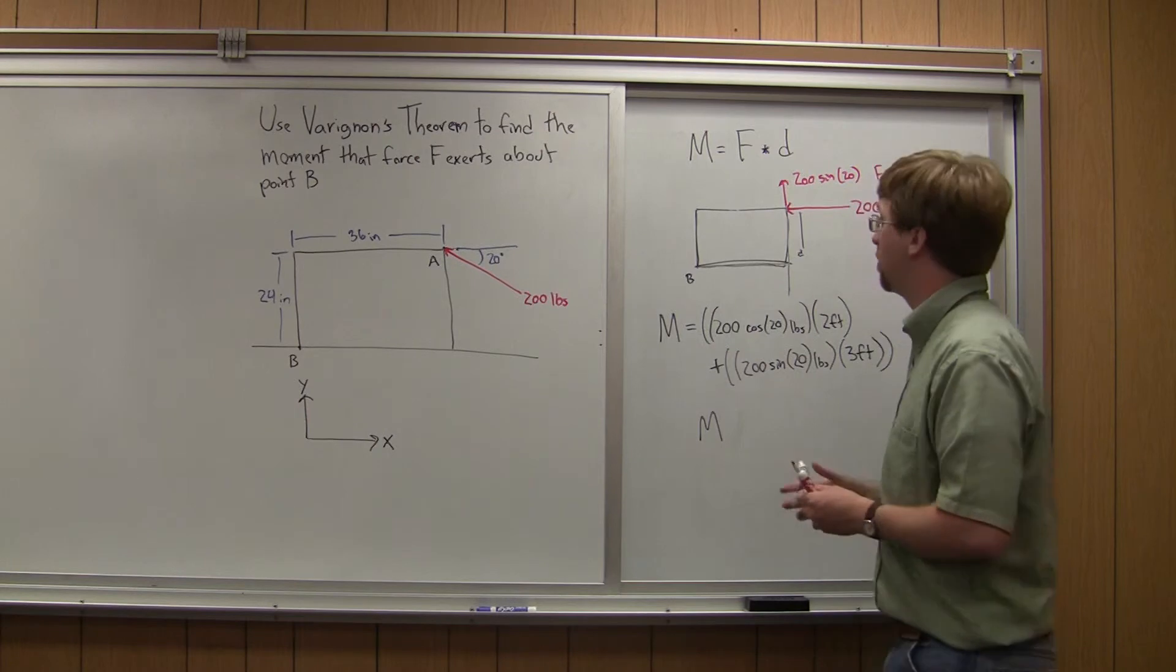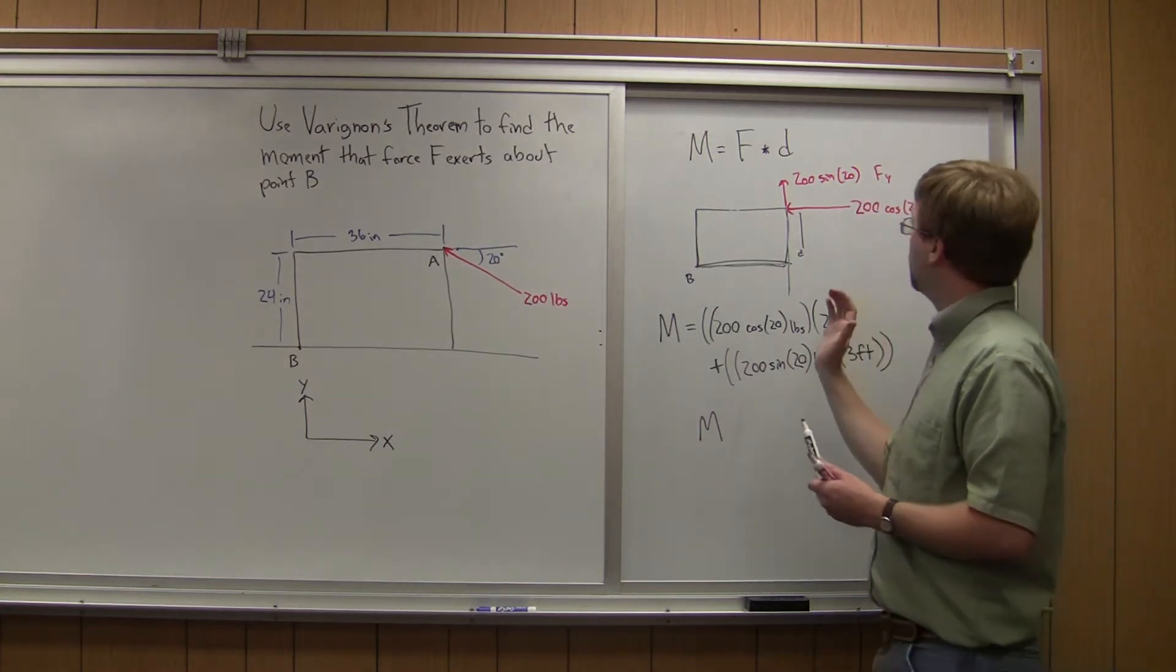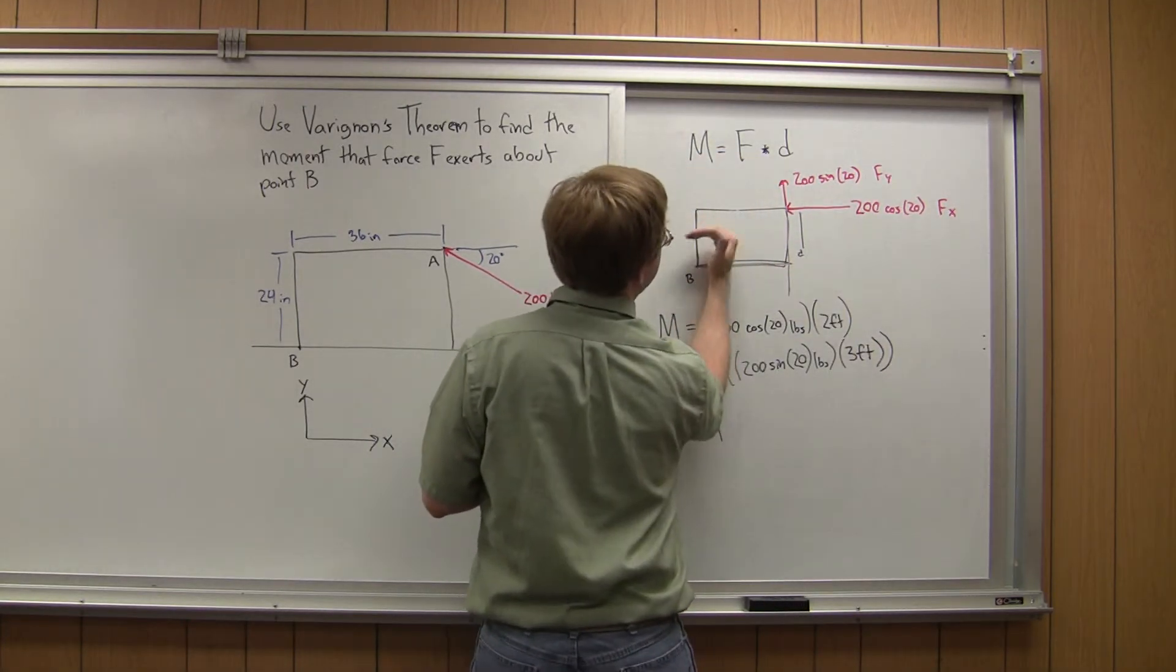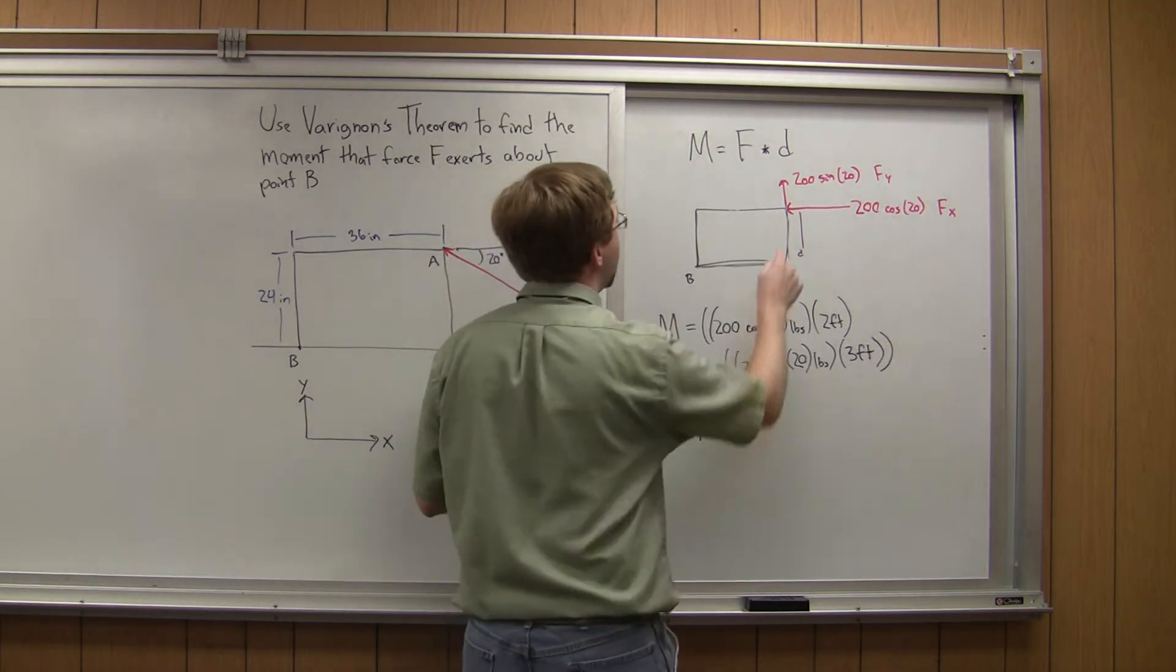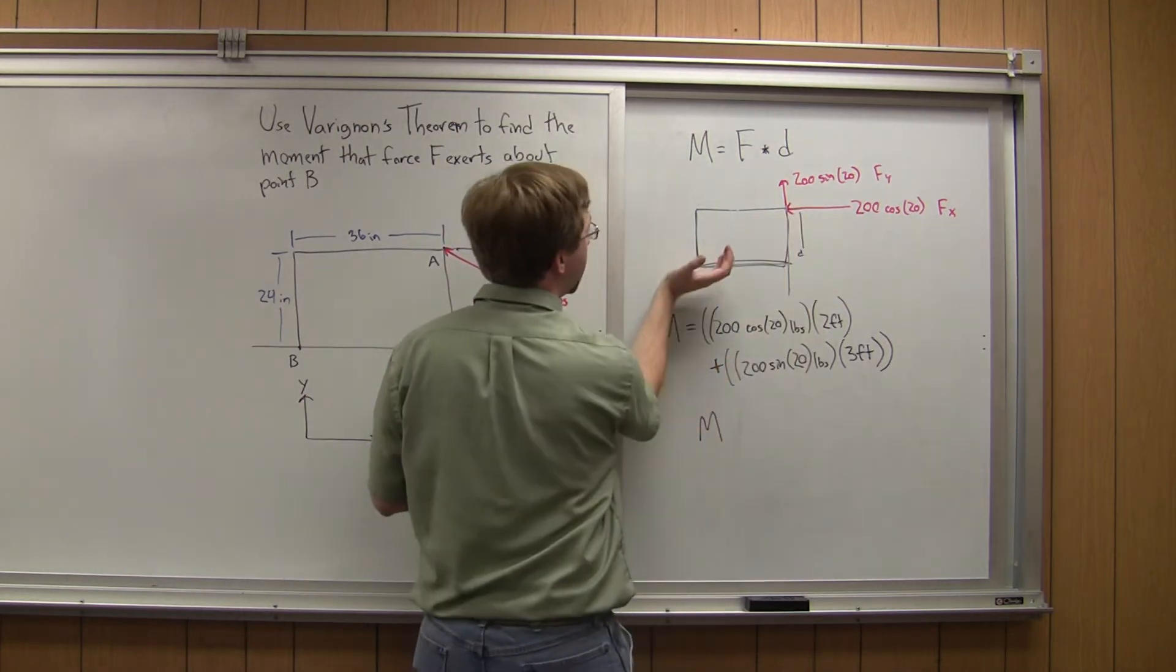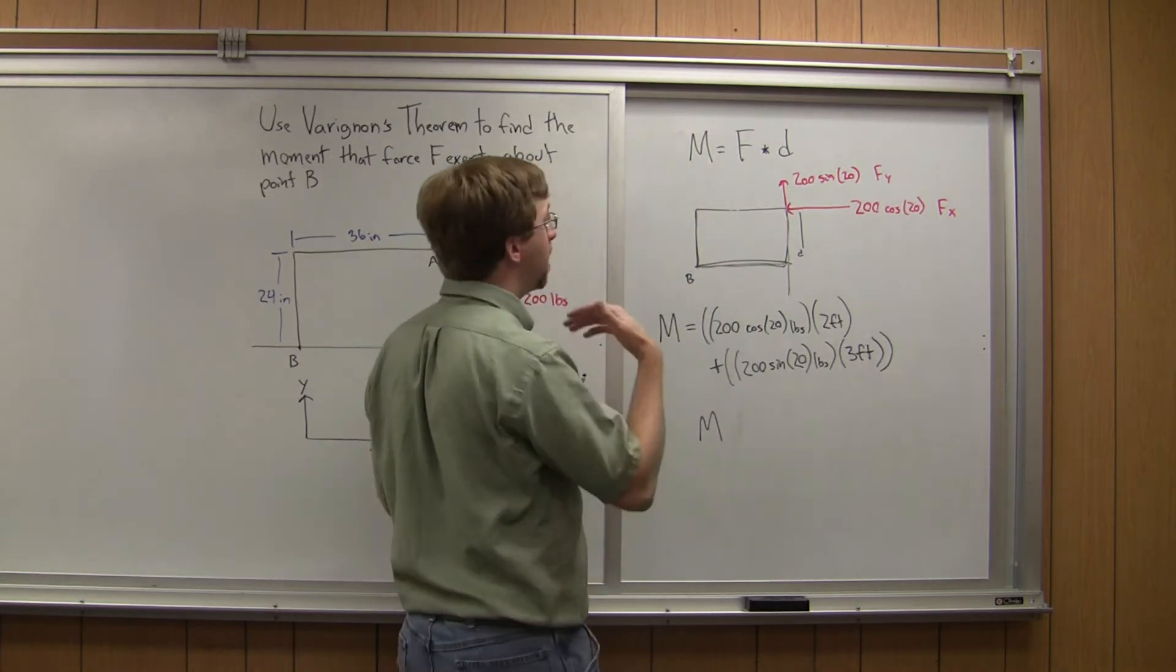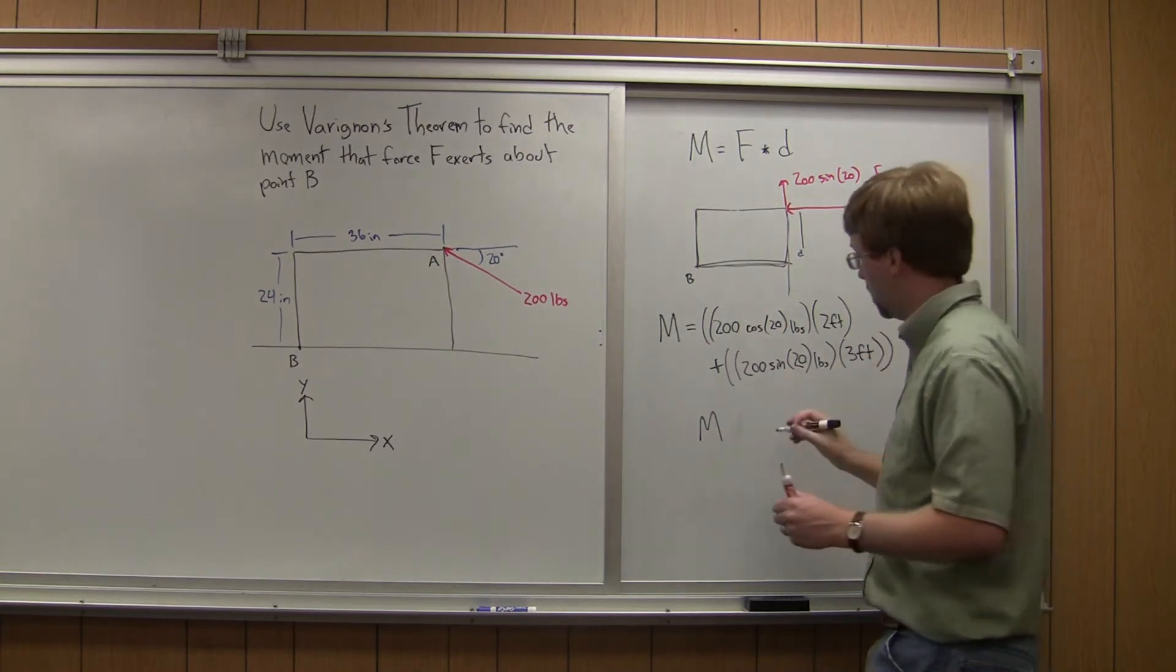Oh, something else to check while we're doing this. We need to check the sign of the moments. So the x component would cause a rotation about B in this direction. That's counterclockwise, so that's going to be a positive moment. And this 200 sine 20 also is going to cause a counterclockwise rotation about B, so that would also be a positive moment. So these are both positive, I can leave them as is.